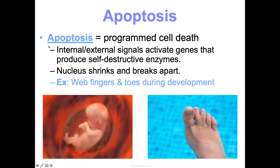Apoptosis is critical — it happens during development. When you're in the womb, your fingers and toes are webbed, but because apoptosis happens, it signals the destruction of those cells. If your body recognizes it has a damaged cell, it will try to kill that cell before it can replicate and produce two, then four, then eight damaged cells. So apoptosis is used to try to catch and destroy damage in cells.